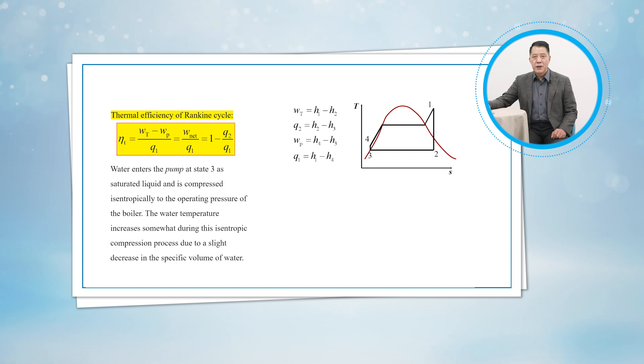The water temperature increases somewhat during this isentropic compression process due to a slight decrease in the specific volume of water. The vertical distance between states 3 and 4 on the T-S diagram is greatly exaggerated for clarity.